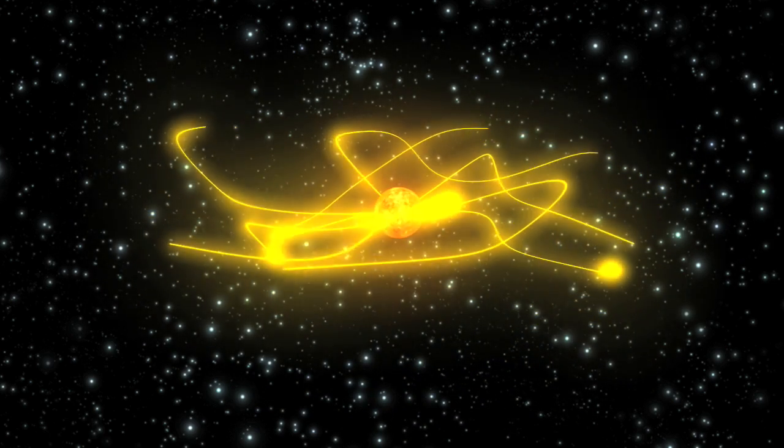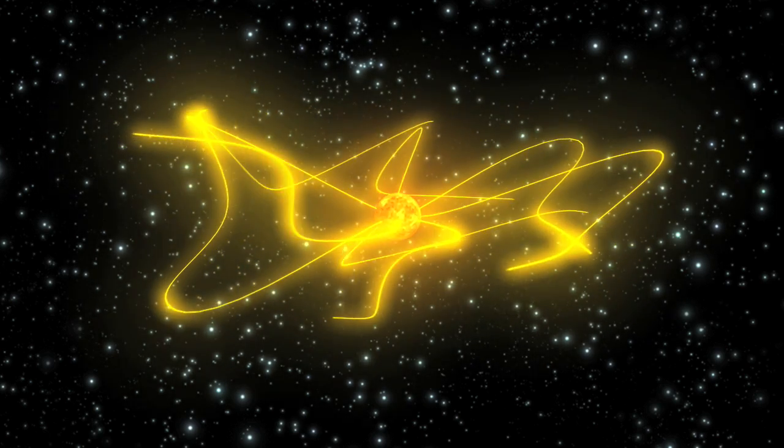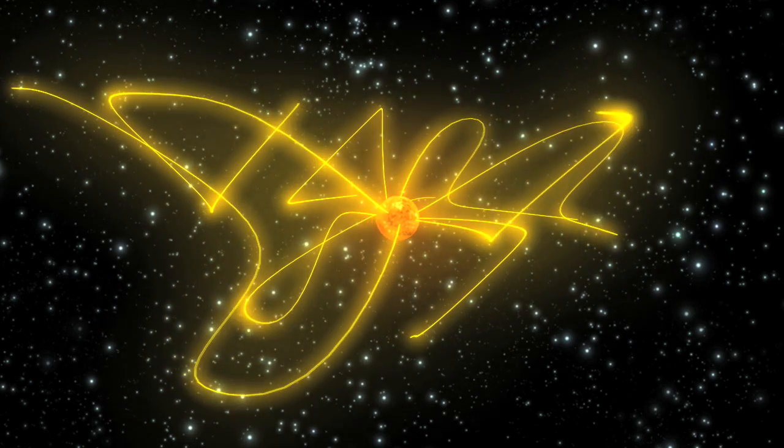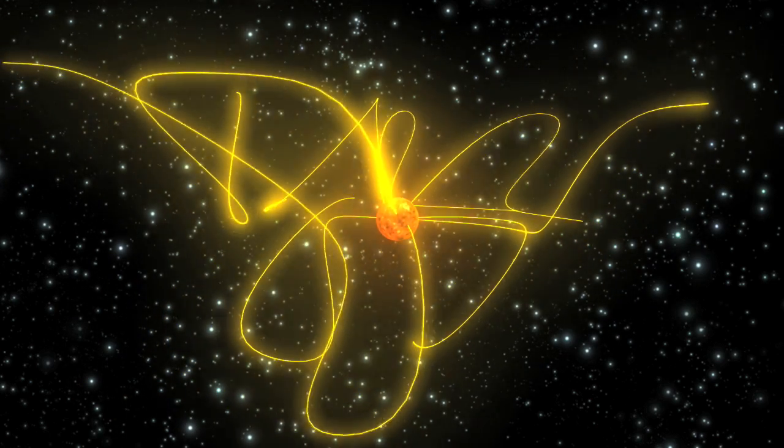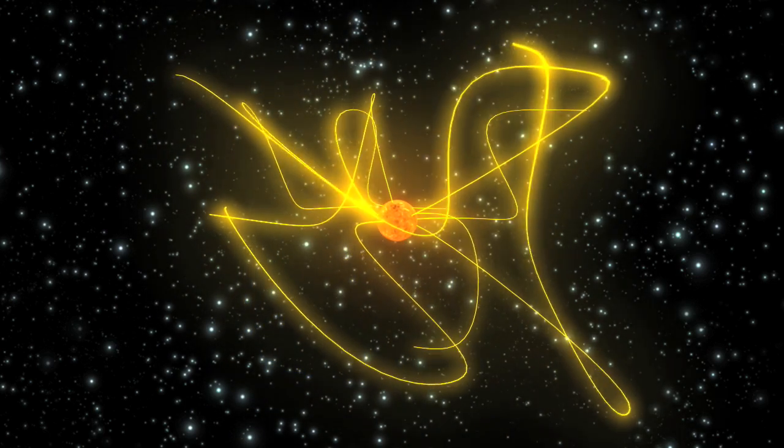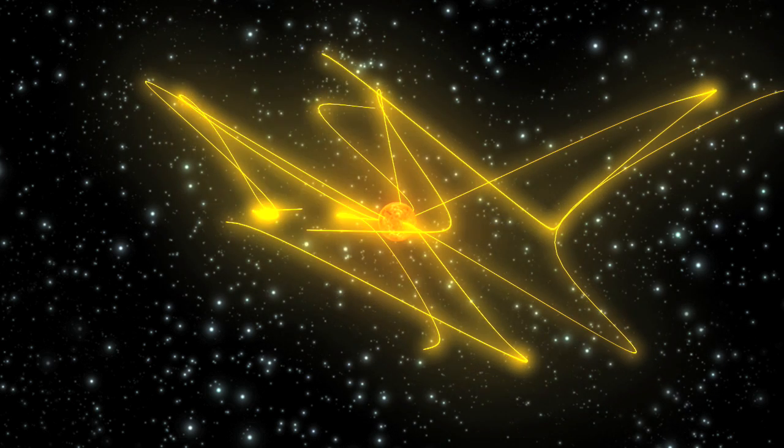However, Ulysses observed large numbers of energetic particles over the solar poles, far away from the location of the solar storms that created them. This discovery has forced scientists to revisit their ideas about the magnetic field and how particles are transported in the heliosphere.